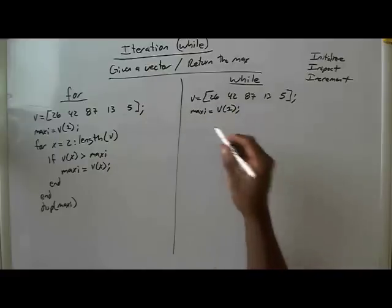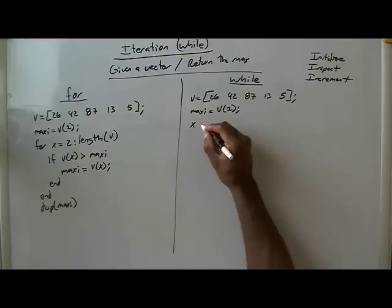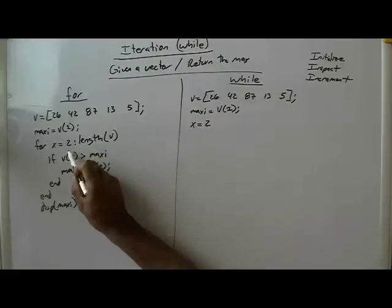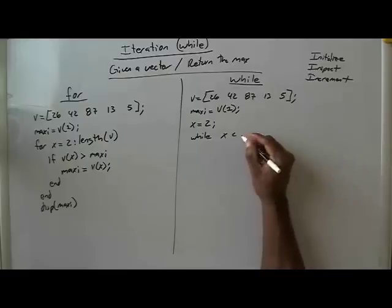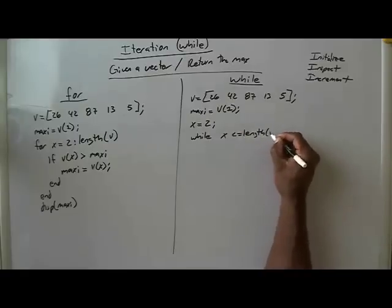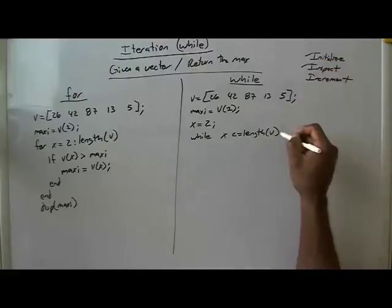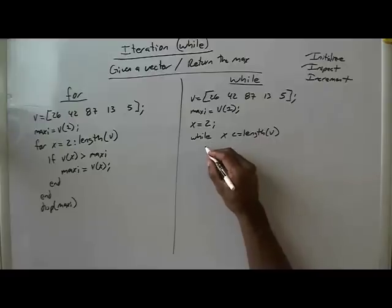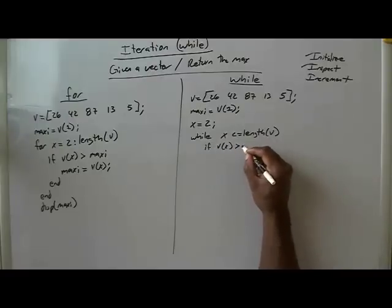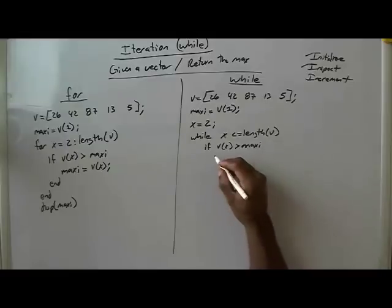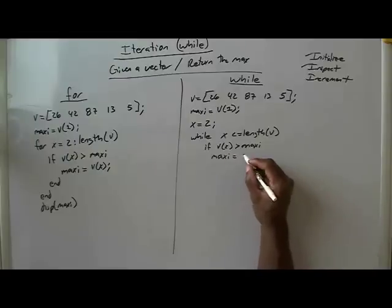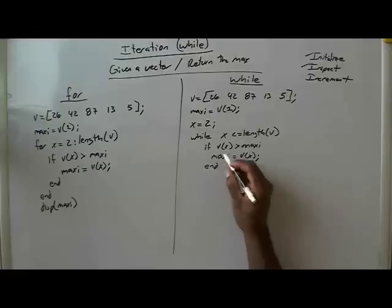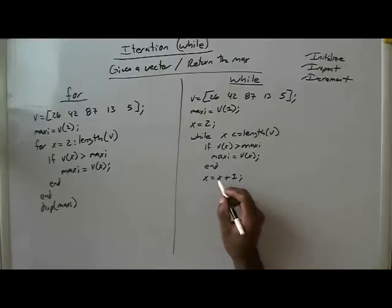As of now these are identical to the for loop side. Now I must initialize my loop variable — I'll call it x, initialized to 2, just as in the for loop. While x is less than or equal to the length of v — this is our inspection stage. If v of x is greater than maxi, we do our work. Once we've done our work, we must do the incrementing part. Then we end our while loop.